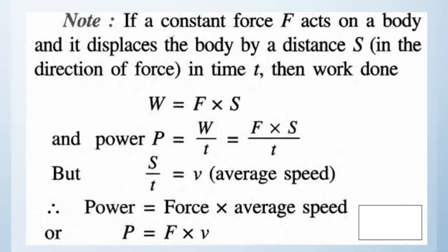If I want to relate force to power, there's a special formula. If a constant force F acts on a body and it displaces the body by a distance S in the direction of force in time t, then work done W = F × S. Power P = W/t = (F × S)/t.